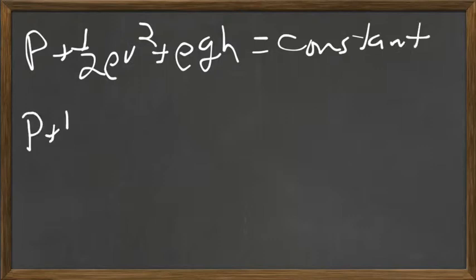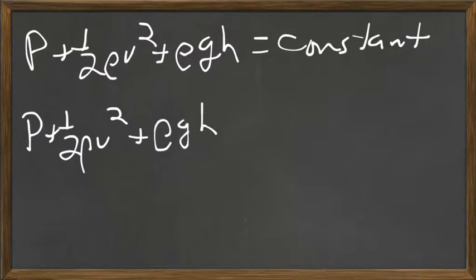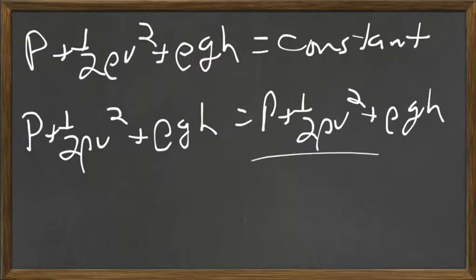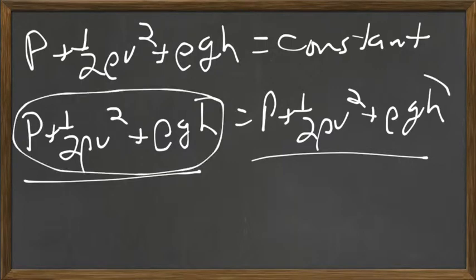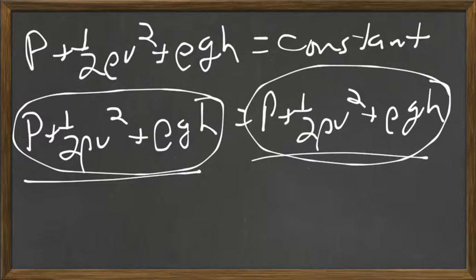Most often you're going to see this used to use one area of a piping system to find out information about another. So this is one area, this is another. All of the energy of this section must equal all of the energy of this section, regardless of how many forms it might come in.